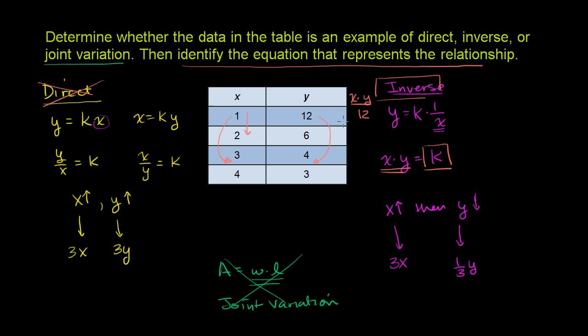Well, 1 times 12 is 12. 2 times 6 is 12. 3 times 4 is 12. 4 times 3 is 12. So clearly, in every situation, x times y is a constant, and it is 12.